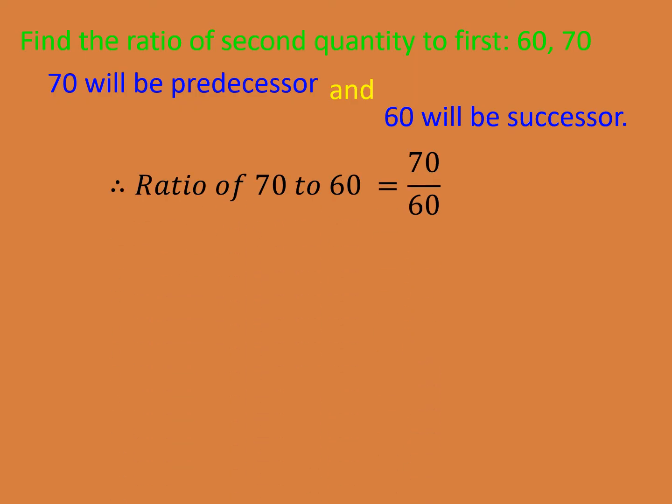Now we have to reduce them the same way. 60 is 10 times 6 and 70 is 10 times 7. I have taken the bigger number; you can first simplify with 2 and then simplify with 5. The common multiple is 10, and therefore the ratio will become 7 upon 6, which can be written as 7 is to 6.